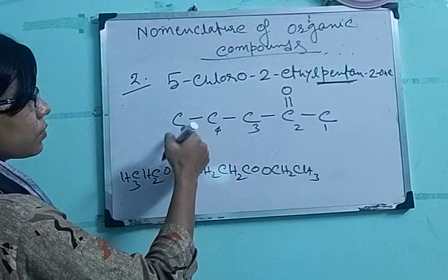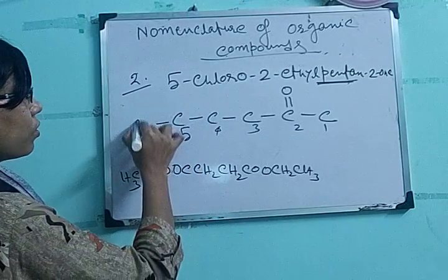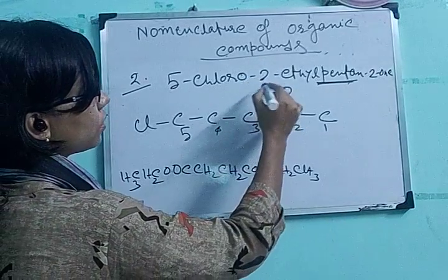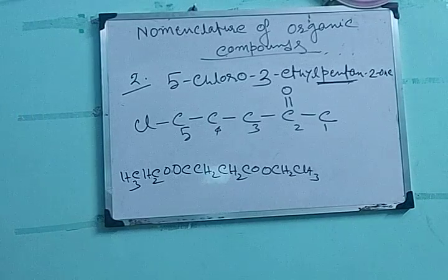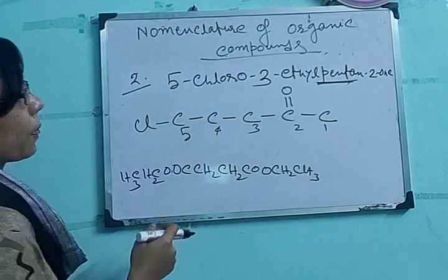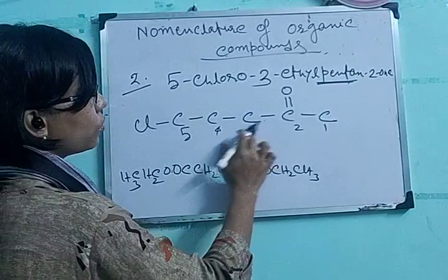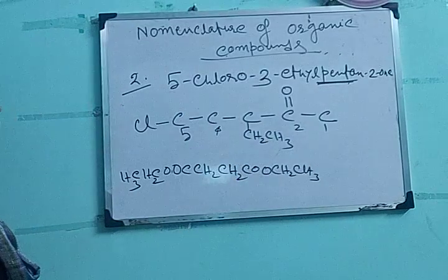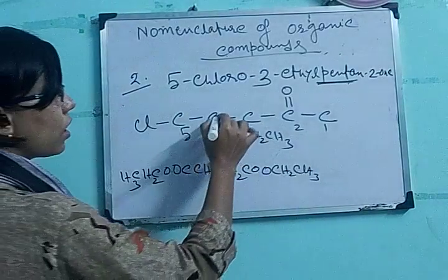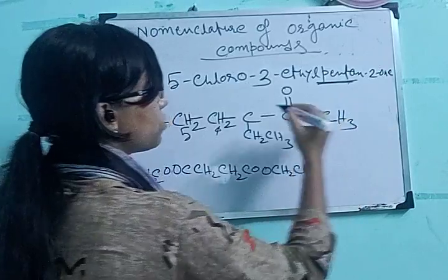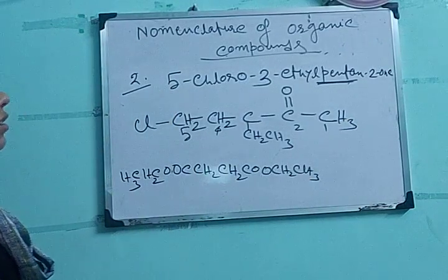Next is 5-chloro: at carbon number 5 there is one chlorine group. Carbon number 3 bears the ethyl group — so it is going to be CH₂CH₃ at C3. Now put hydrogens by fulfilling the valency of carbon: CH₂, CH₂Cl. And here is CH₃. So 1, 2, 3, 4, 5 — pentane, 2-one. 5-chloro-3-ethyl-pentan-2-one.